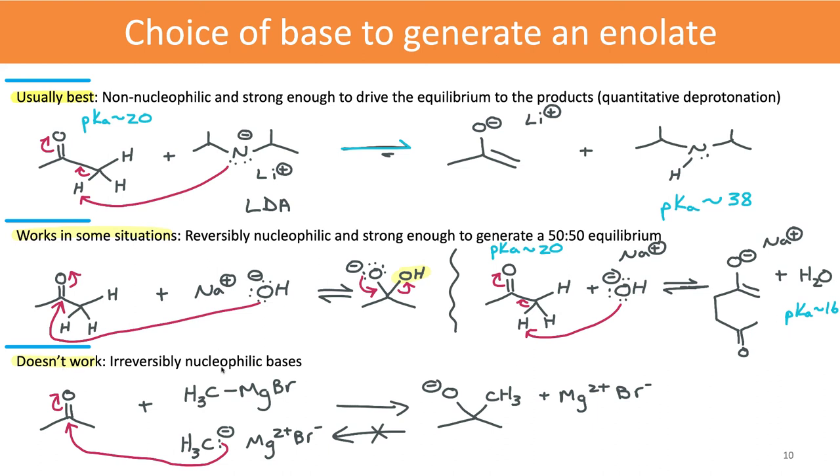We want to be careful not to use any irreversibly nucleophilic bases like Grignard reagents because they just react at the carbonyl carbon instead of generating the enolate.